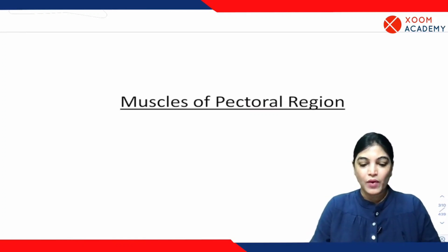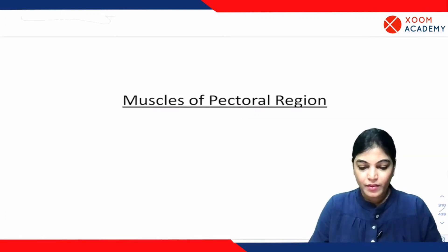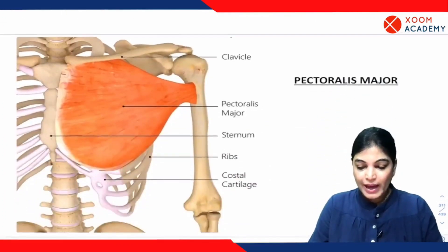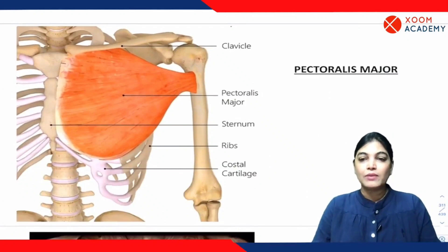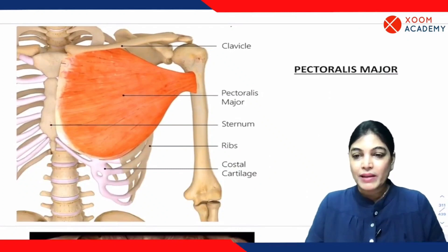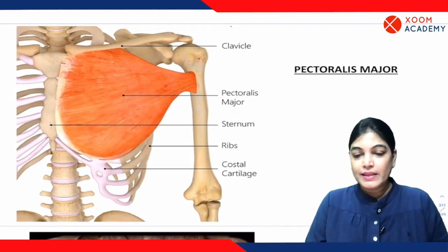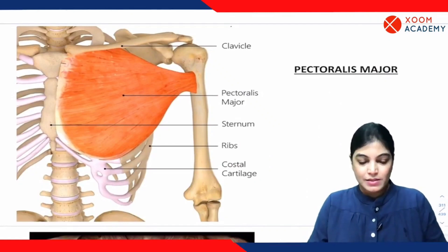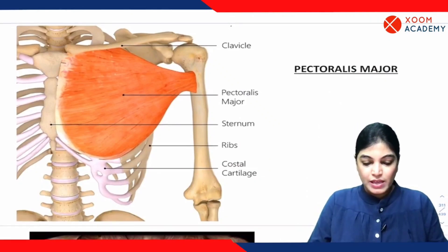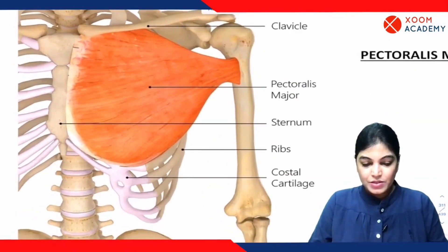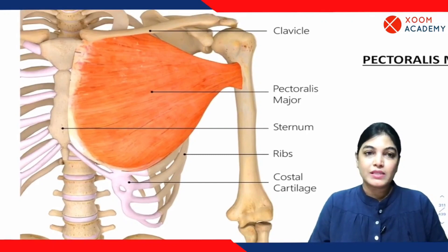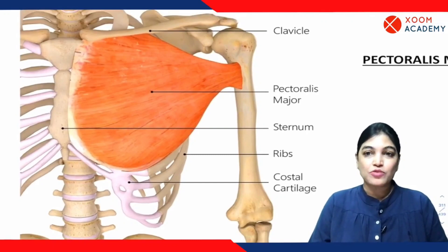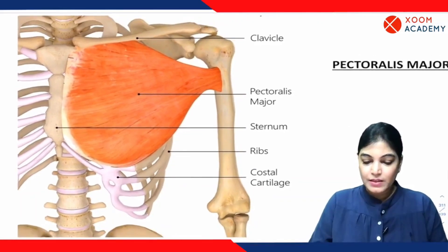Let's discuss the muscles one by one. I would like to start with pectoralis major muscle. I would like to explain with the help of this diagram and then we can go through each and every muscle. Let me just enlarge this image. This is a schematic diagram to help you understand the attachment of pectoralis major muscle.